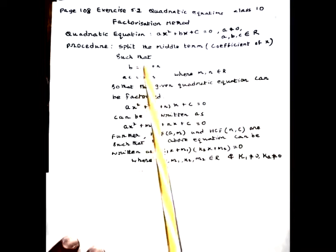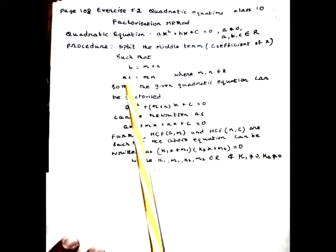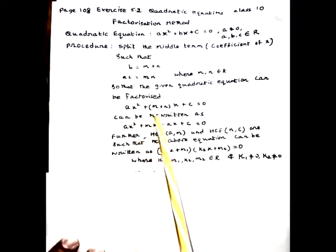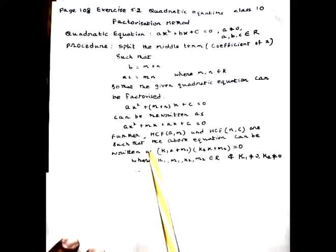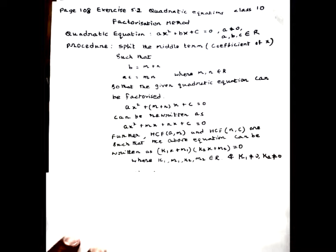By splitting the middle term, the coefficient of x is split such that b = m + n and product ac = mn, where m and n are real numbers, so that the given quadratic equation can be factorized as ax² + (m+n)x + c = 0, and further as (k₁x + m₁)(k₂x + m₂) = 0. We will understand this by going through some problems.